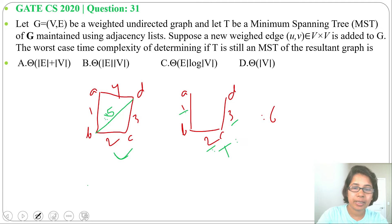So this is still minimum spanning tree of the resultant graph. We are comparing with every edge of minimum spanning tree. In minimum spanning tree, there are number of vertices minus 1 edges. So running time will be order of V.